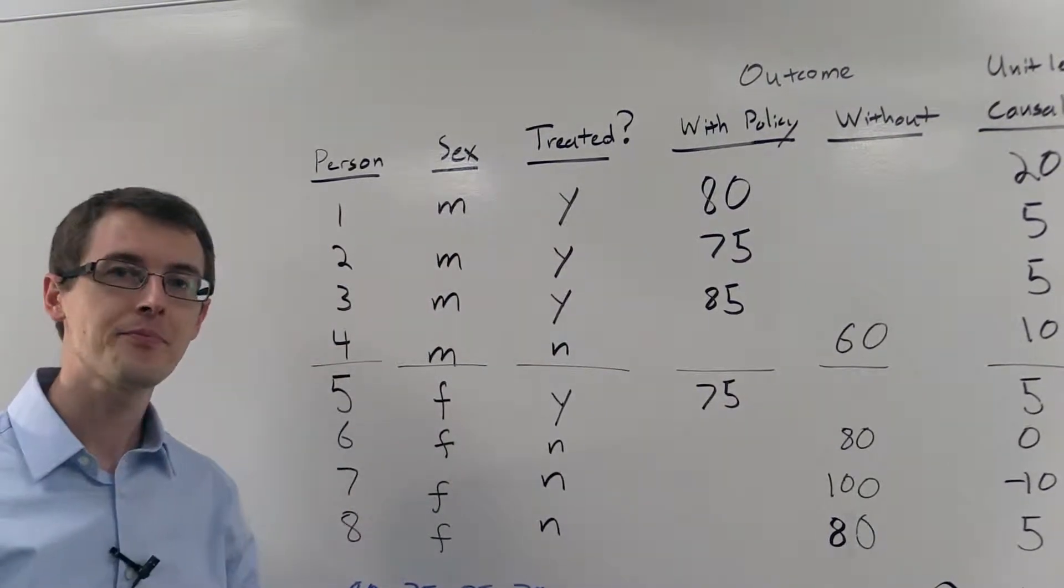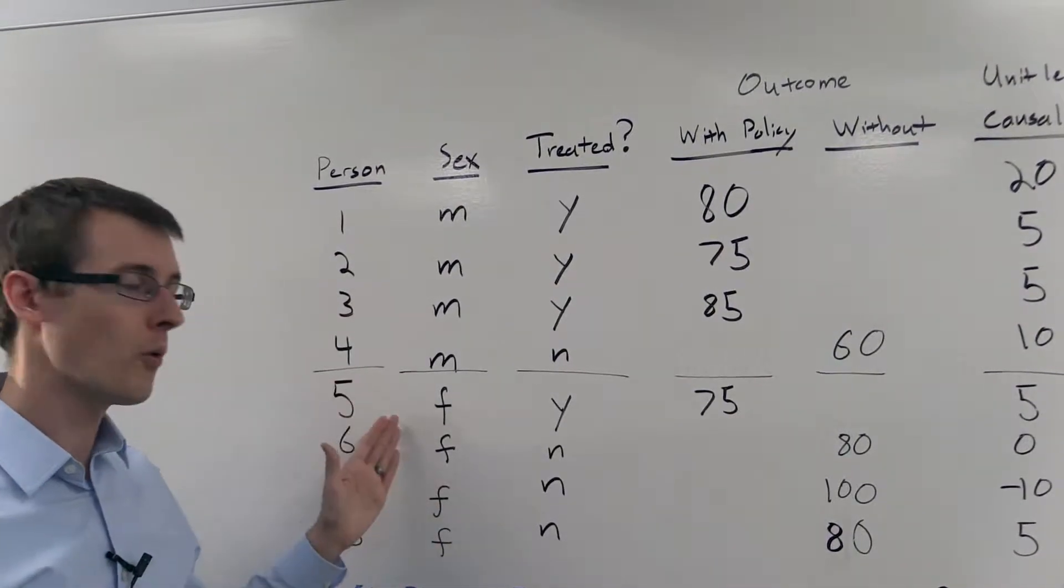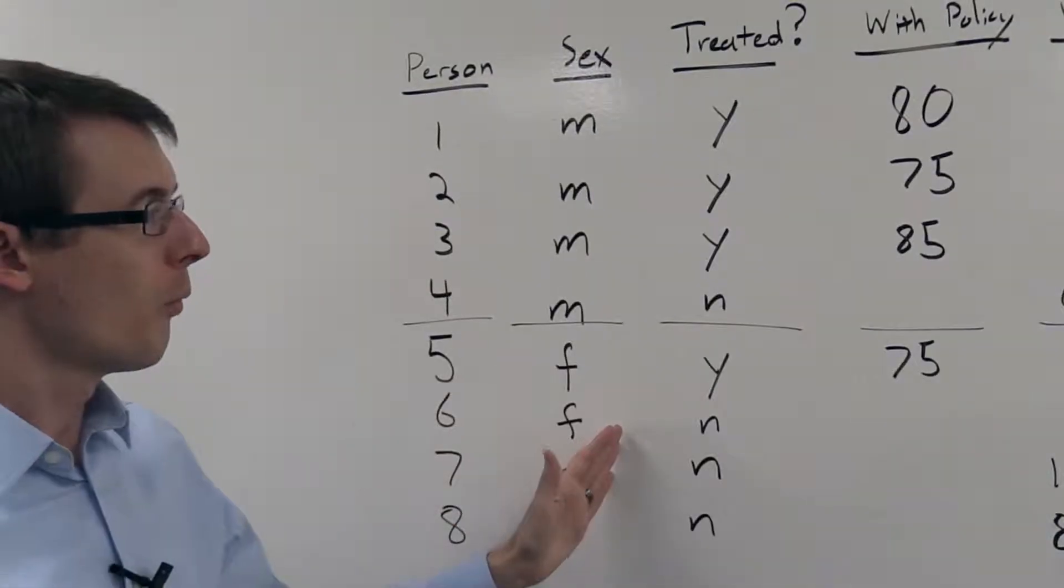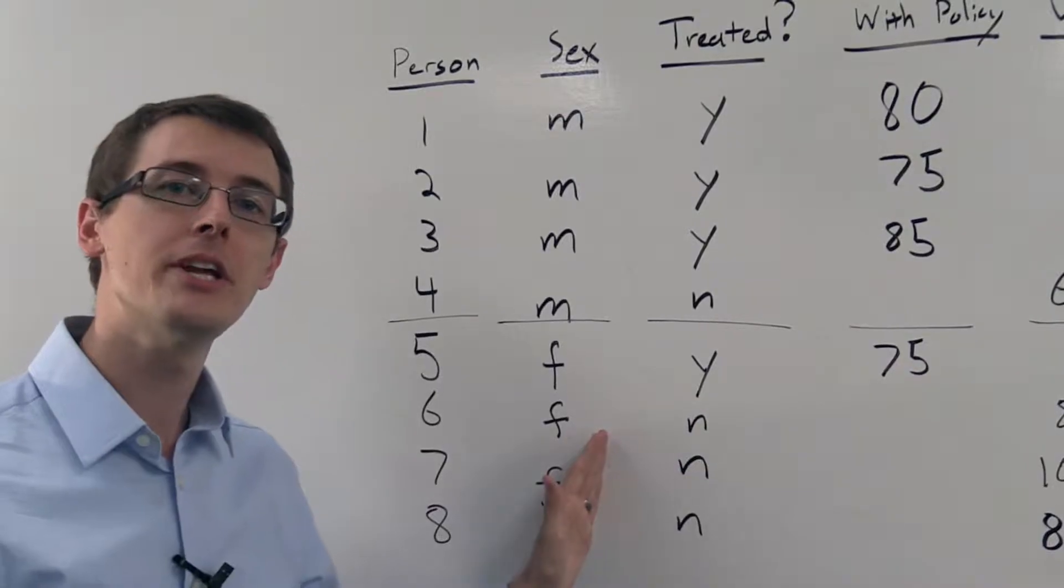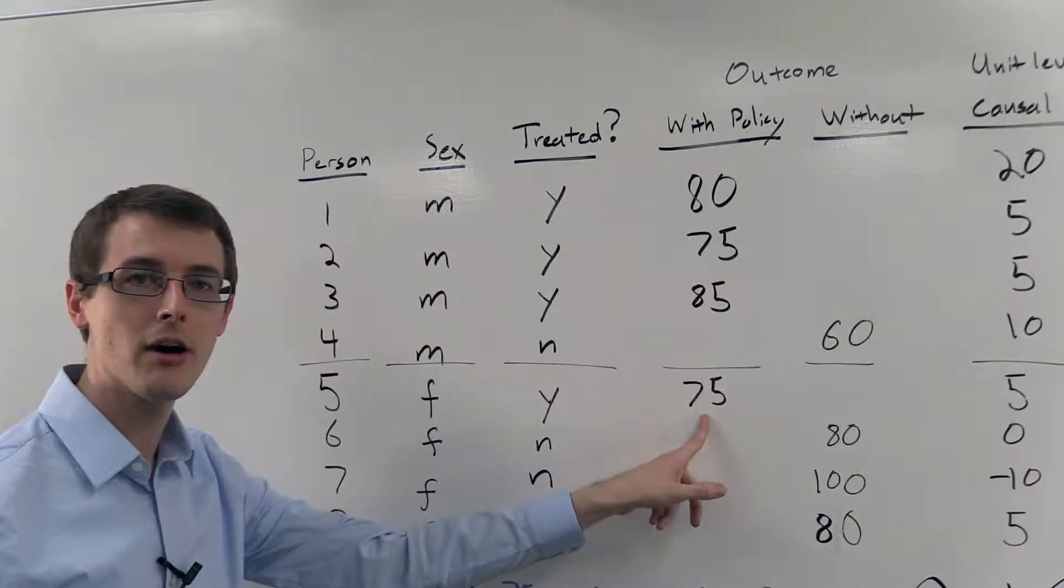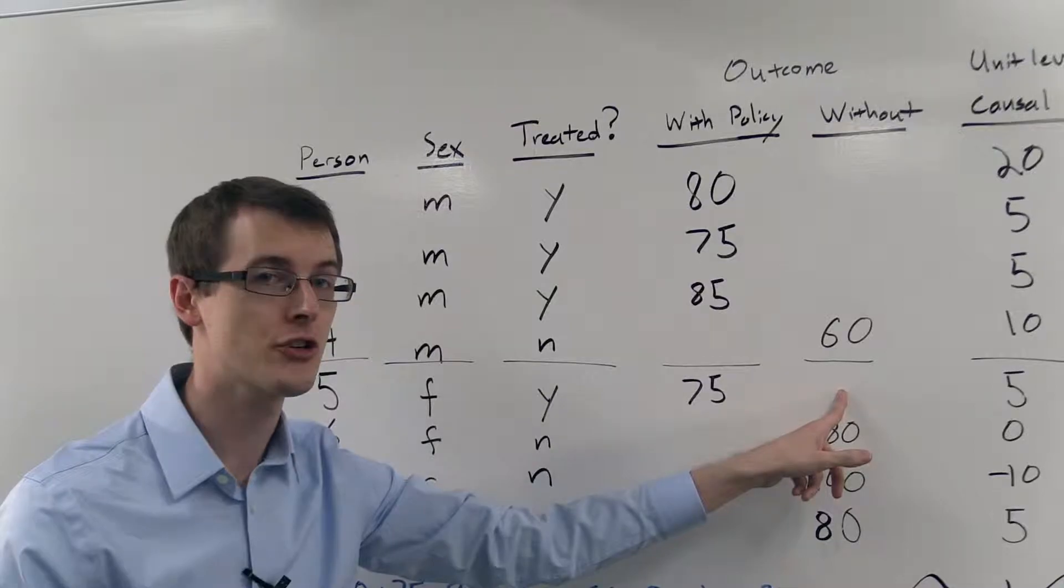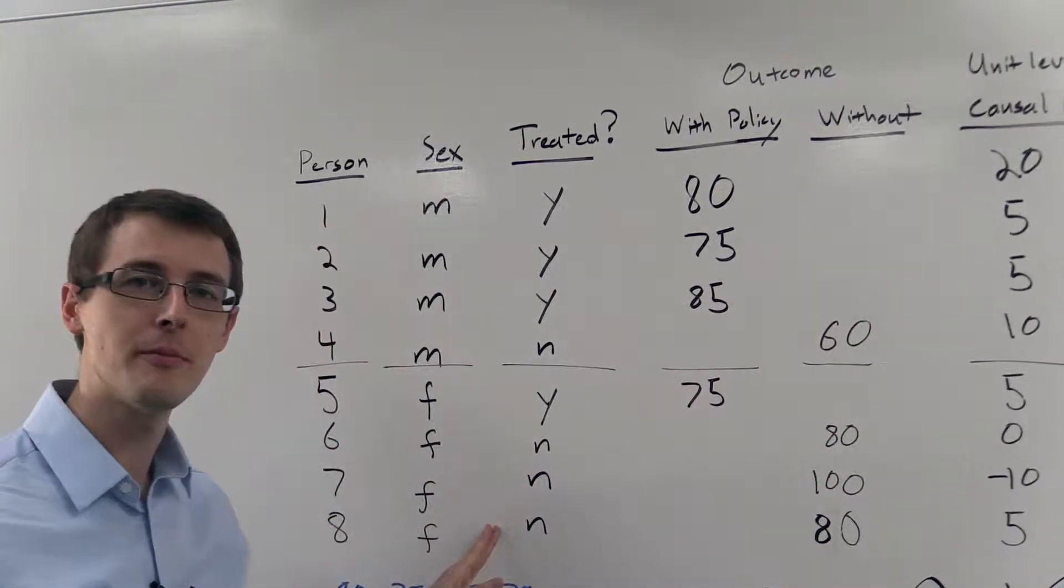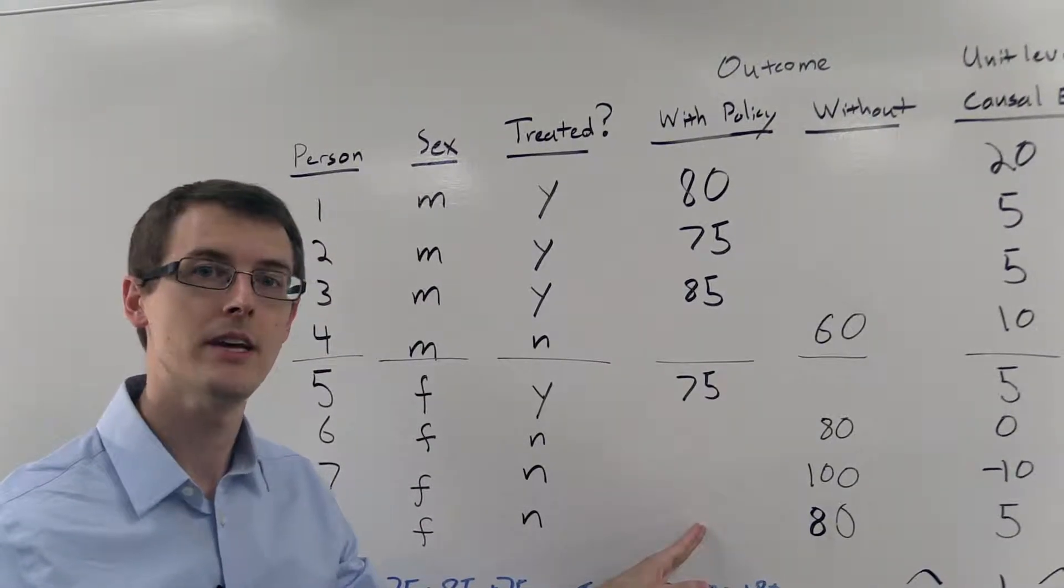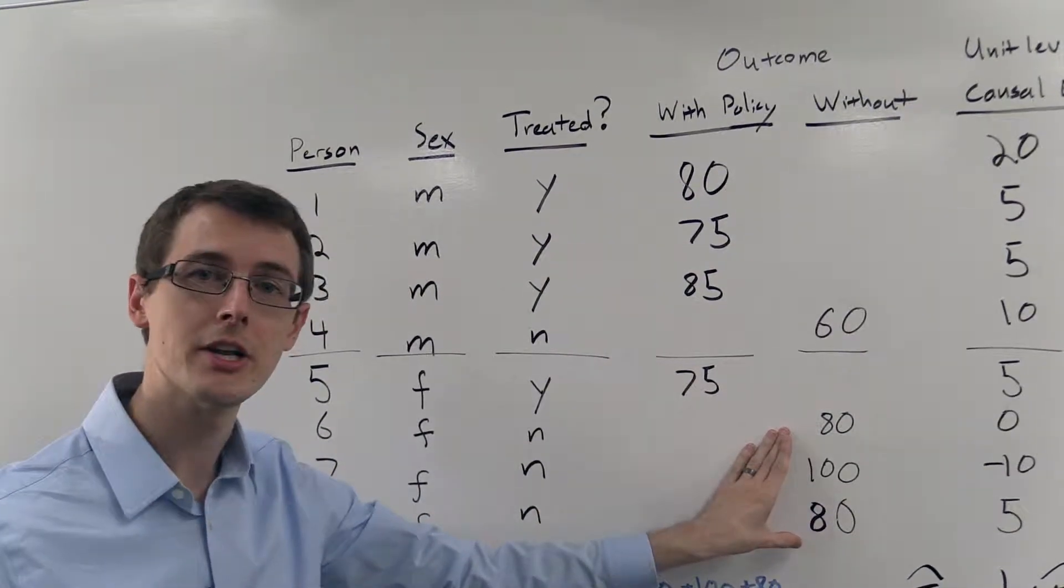Under that assumption, we can compute from our data the conditional average treatment effect for females and for men as follows. Once we've gotten our data, we're only going to see one potential outcome. For the first female, she was treated, so we see her outcome when she was treated. We do not see what would have happened if she wasn't treated. For the other three females, we do not see what happens if they had been treated, because they weren't. Instead, we see what happens when they weren't treated.